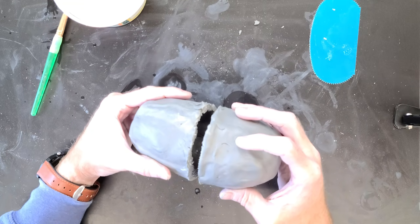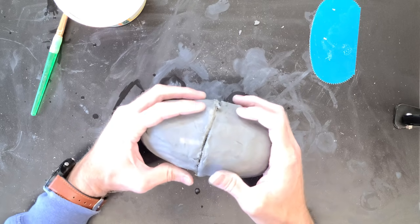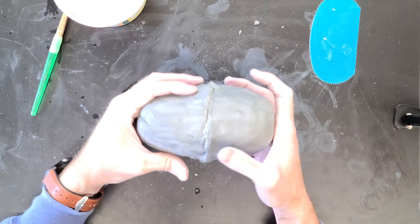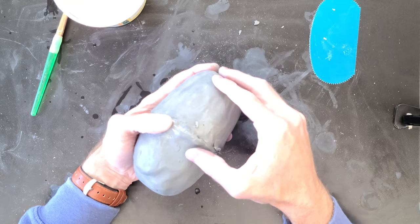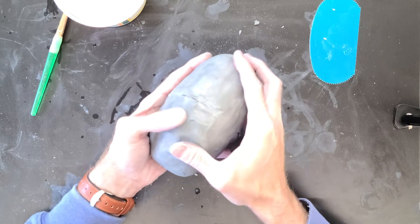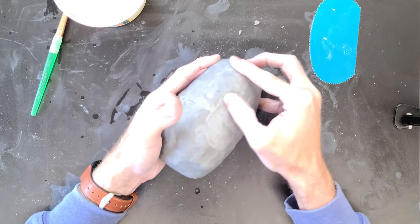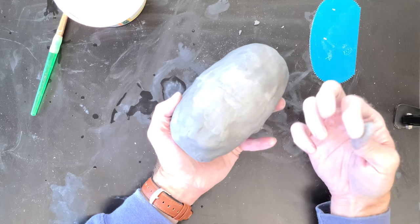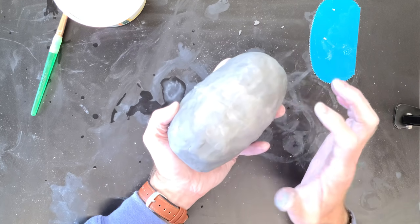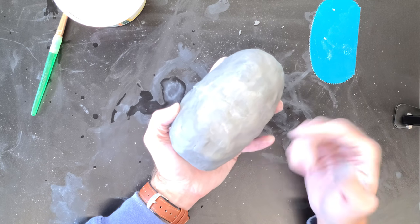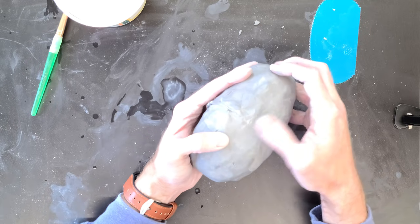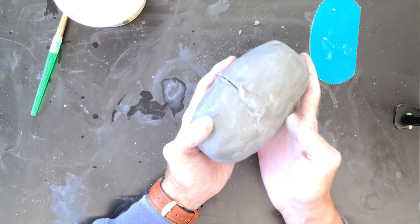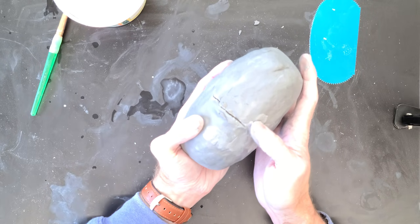I'm going to put these two together, press gently, and then connect them. I'm just going to drag my finger across. Now I have to be careful because this is wet, and I'm actually making marks with my fingerprints. If I let that dry and fire it, I will see my fingerprints in the clay. Water does not smooth out clay. I'm only dragging this across to get the seam away.